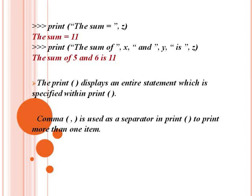Fourth method: we need a number of strings and number of variables. Here the first string is 'the sum of', then variable X, then the string 'and', then variable, then the string 'is', then the variable. So the output is: the sum of 5 and 6 is 11. The sum is equal to 11.